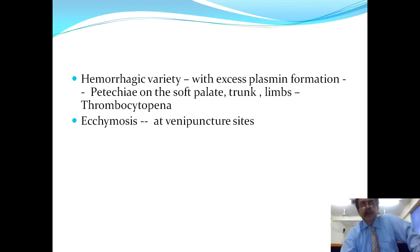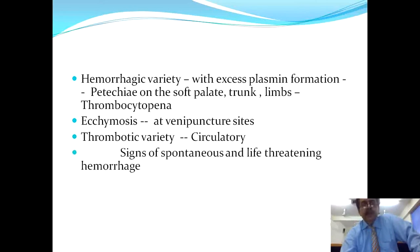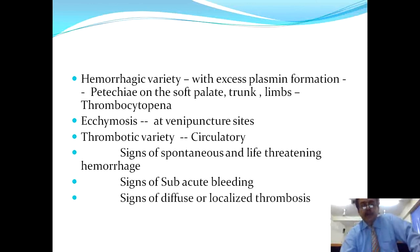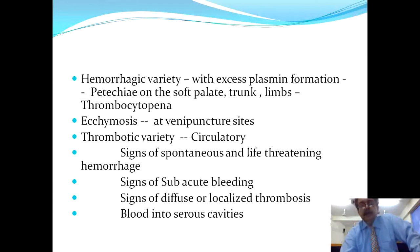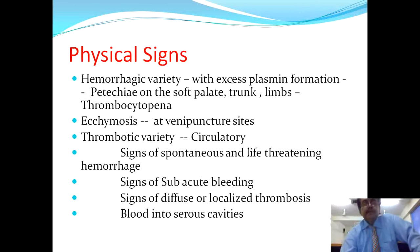The patient will also have ecchymosis especially at venipuncture sites. In the thrombotic variety, circulatory failure results, and signs of spontaneous and life-threatening hemorrhage can occur preceded by thrombosis due to consumptive coagulopathy. Signs of sub-acute bleeding and diffuse or localized thrombosis may be found. Blood may also accumulate in serous cavities like the peritoneum, pleural spaces, and pericardial spaces.